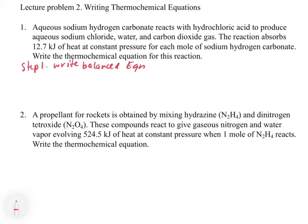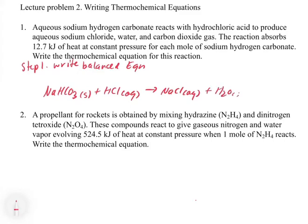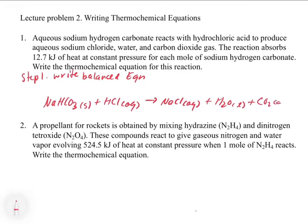To write the balanced equation, we go to our nomenclature. Sodium hydrogen carbonate reacts with hydrochloric acid to produce aqueous sodium chloride, water, and carbon dioxide gas. That's step one — we write down our balanced equation, and a lot of that is just nomenclature.